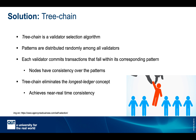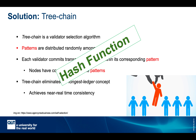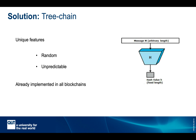Patterns are distributed randomly among validators, and each validator commits the transactions falling within its corresponding pattern. All nodes maintain consistency over the pattern assignments, so they know who would be the validator of any transaction in the network. This eliminates the need for the longest ledger concept and achieves near real-time consistency. The entire consensus depends on how we define these patterns, and the level of randomness and unpredictability of those patterns.